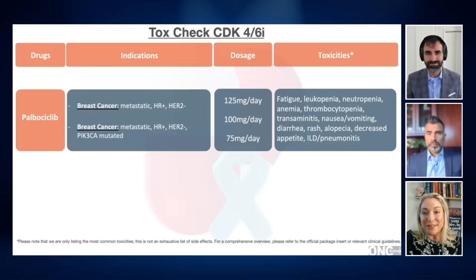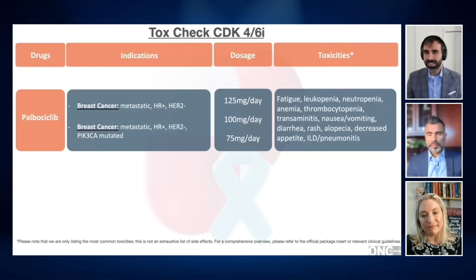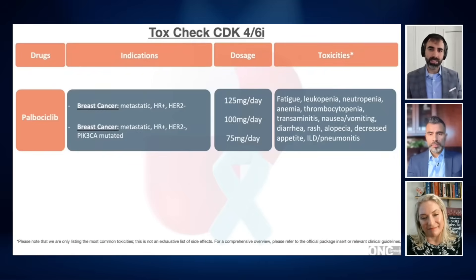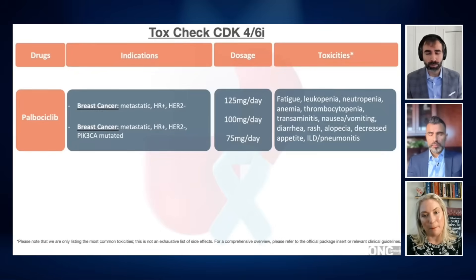Just like with the other two CDK4-6 inhibitors, I still tend to start at the 125mg dose and monitor their CBC quite carefully. Going back to ILD — you touched on immunotherapy, something we're using heavily, CDK4-6 inhibitors, and T-DXd, of course, carries mortality associated with ILD. So we have to put our internist hats on and rely on our pulmonologists.